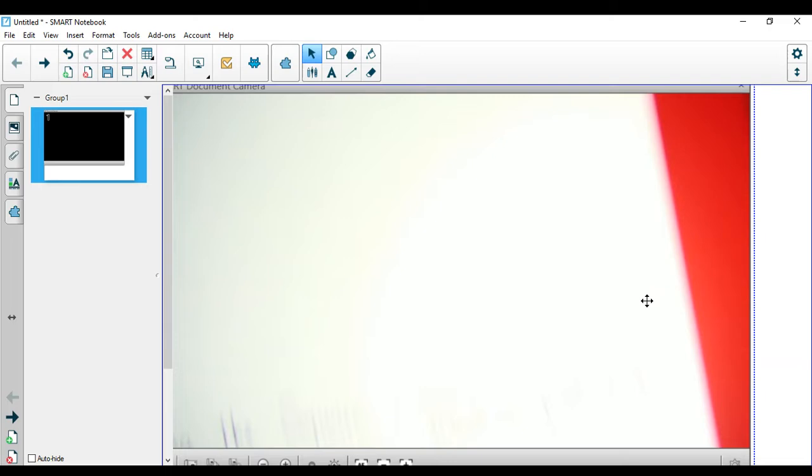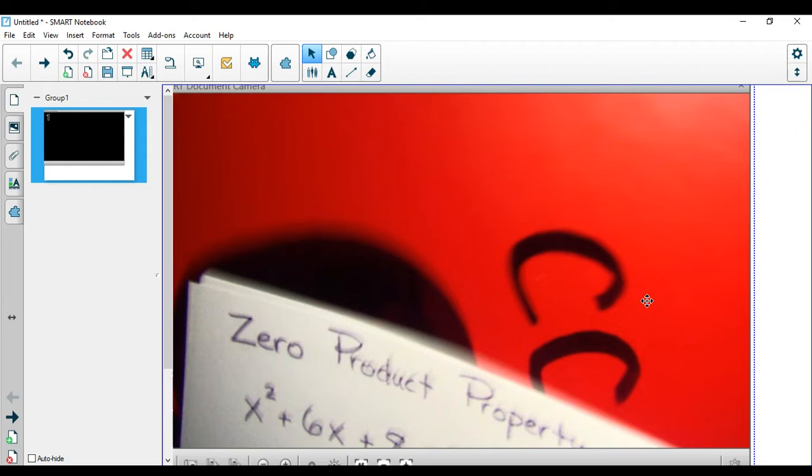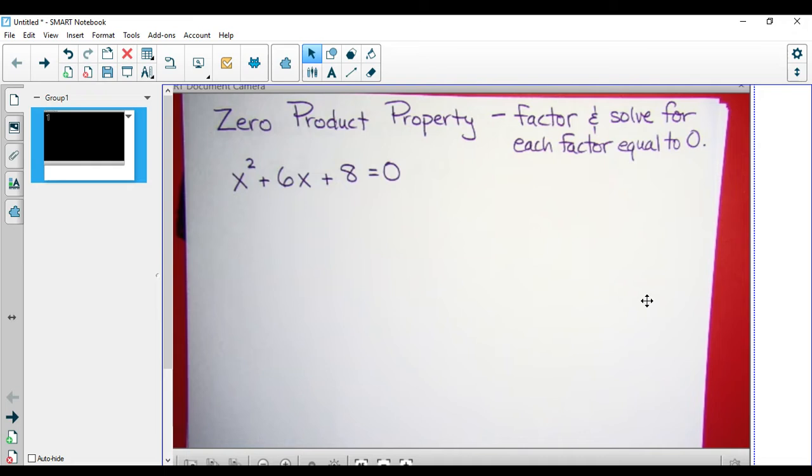We're going to start off with the zero product property. With the zero product property, we need to be able to factor and then set each factor equal to 0 and solve it.